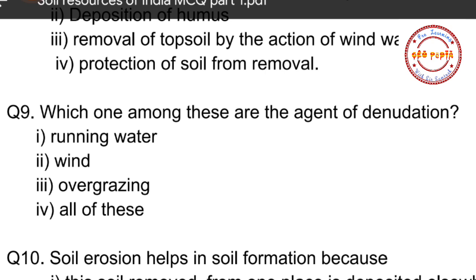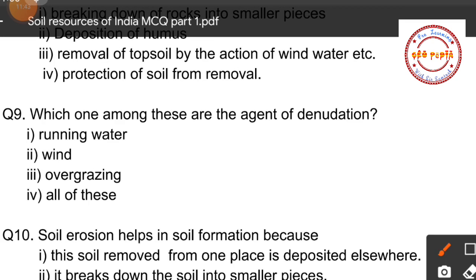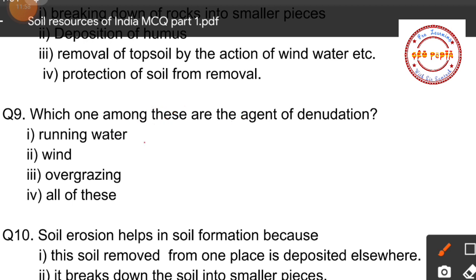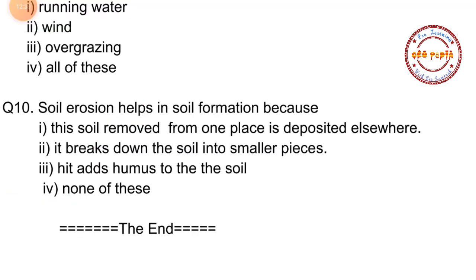Question number nine: Which among these are the agents of denudation? Option one: running water, option two: wind, option three: overgrazing, option four: all of these. Running water, wind, and overgrazing are all agents of denudation, so the correct option is option number four — all of these.